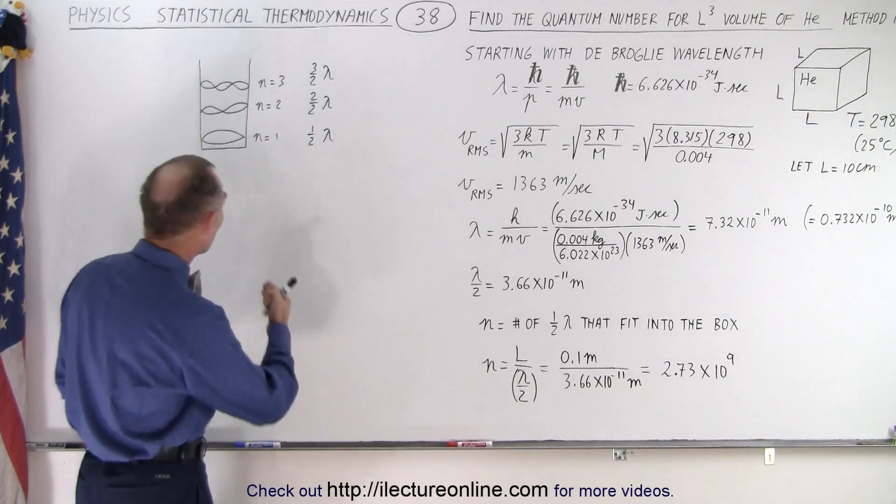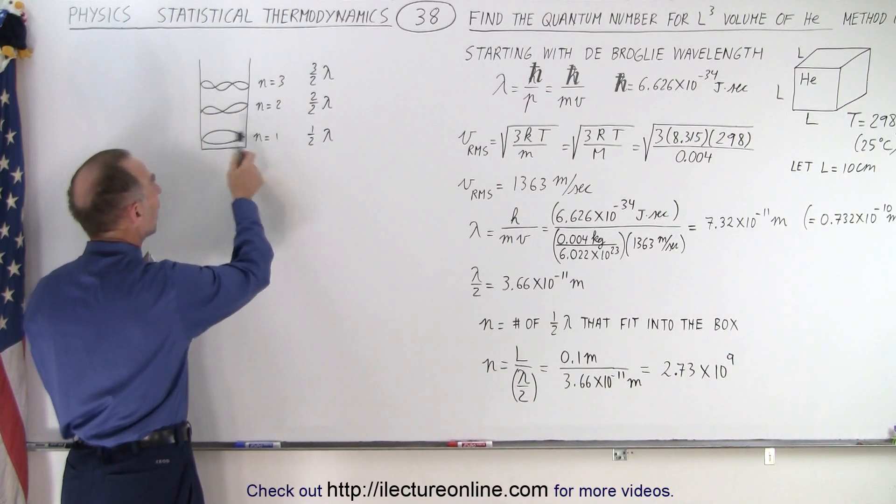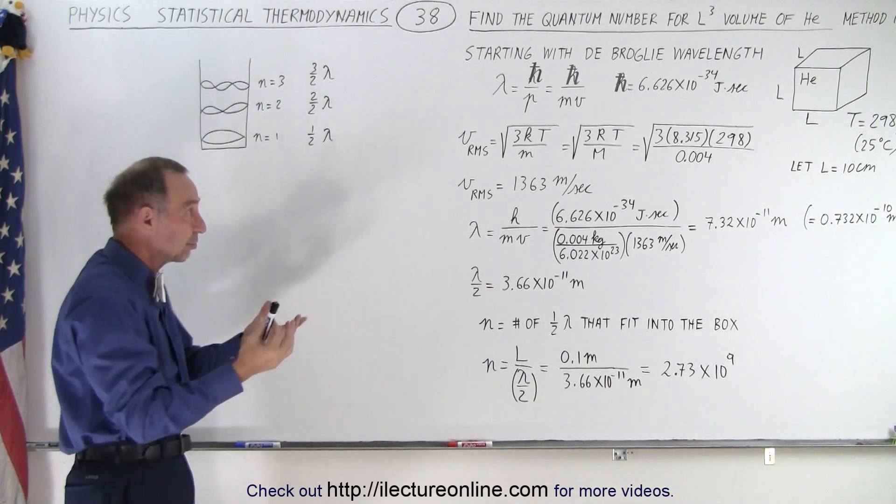The idea is that if we go to a one-dimensional well, notice that the quantum number depends upon how the object, the object we're talking about, could be an electron, could be, in this case, like a helium particle.